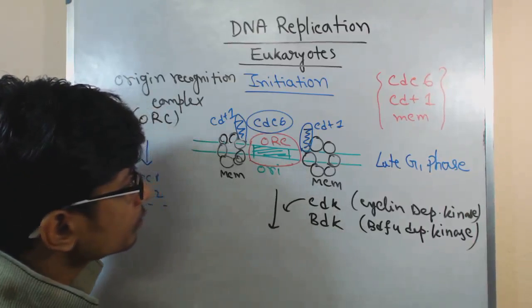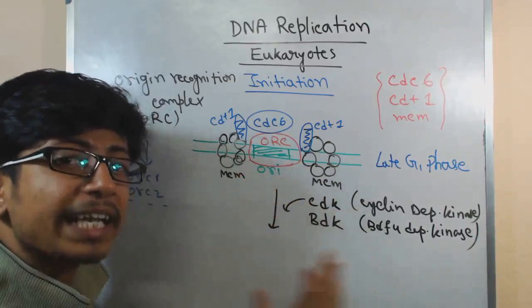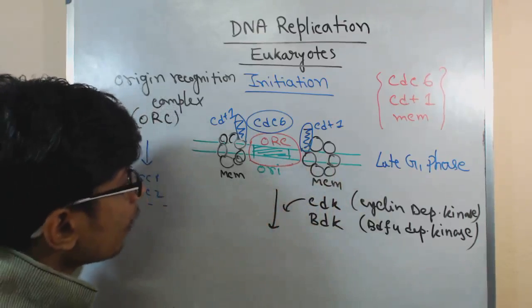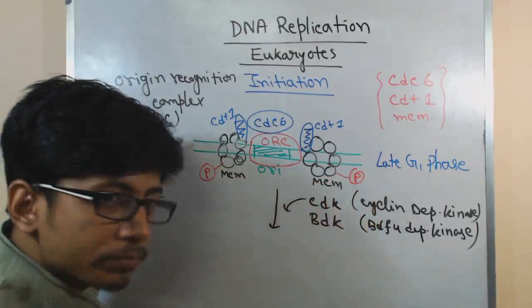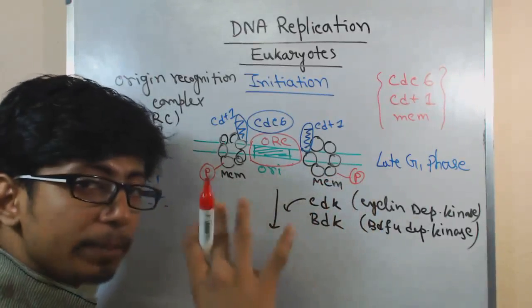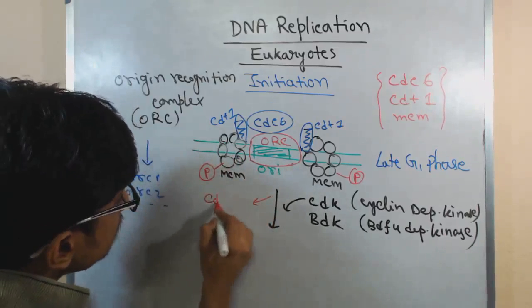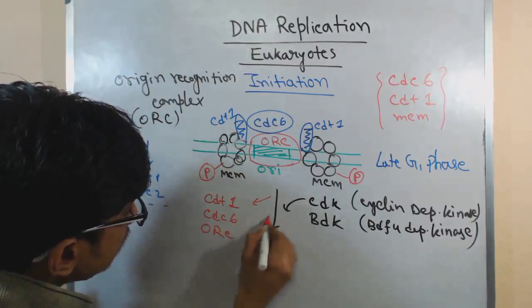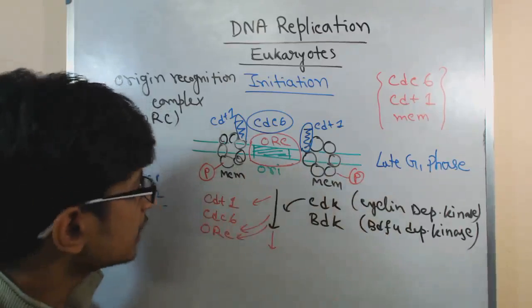Upon phosphorylation of CDC6 and CDT1, these two proteins leave this complex. And also ORC will also be removed. ORC is also phosphorylated and removed. On the other hand, this MCM is phosphorylated. Once phosphorylated, MCM gets active and remains firmly attached to the DNA. It releases CDT, it releases CDC6, and it also releases the ORC.